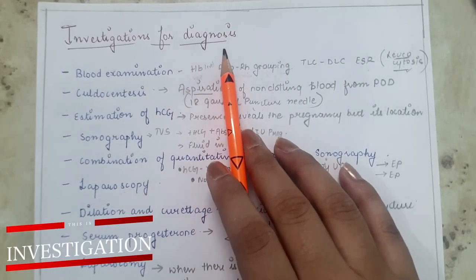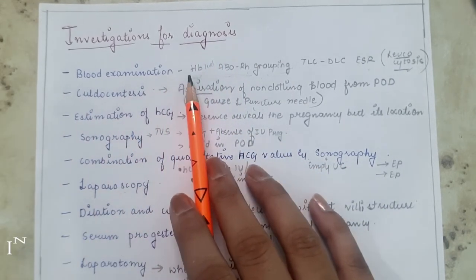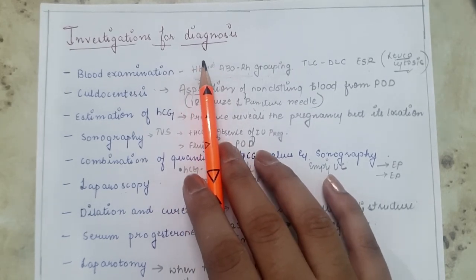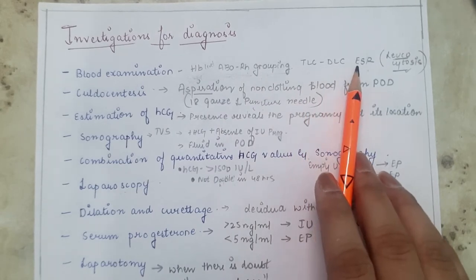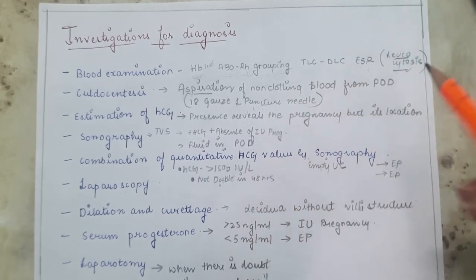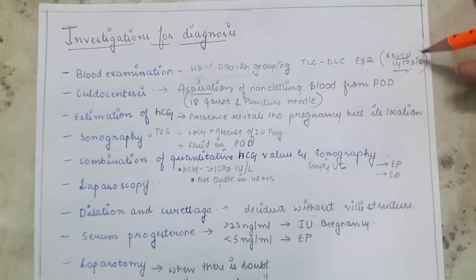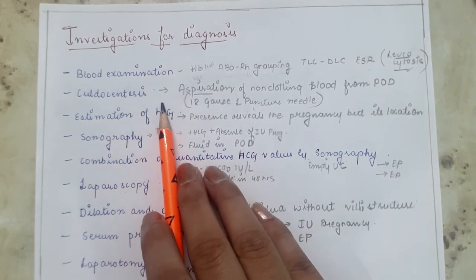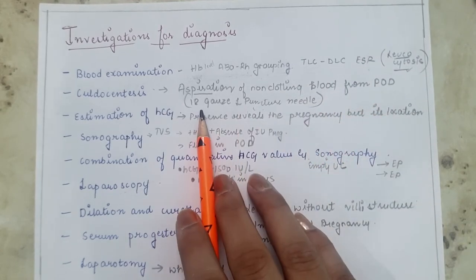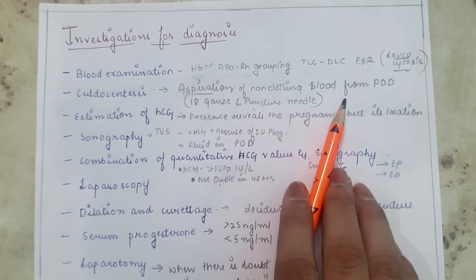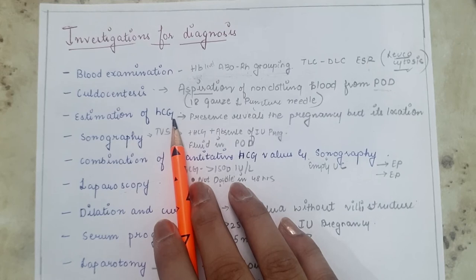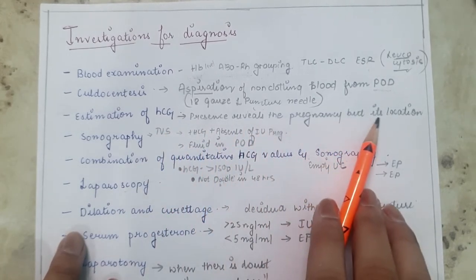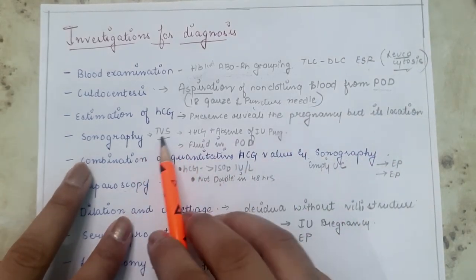Investigations for tubal pregnancy include: blood examination — hemoglobin level, ABO/Rh grouping (in case transfusion is needed), TLC, DLC, and ESR (elevated due to leukocytosis from infection). Culdocentesis — removing blood from the pouch of Douglas via an 18-gauge lumbar punch needle inserted through the posterior fornix. Estimation of HCG reveals pregnancy but not its location.